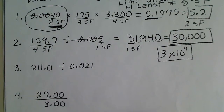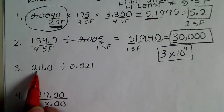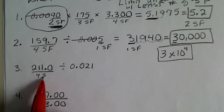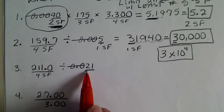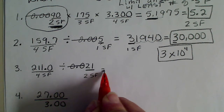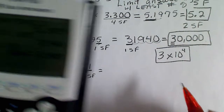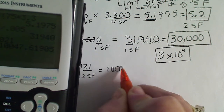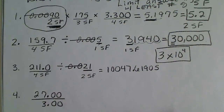In this next example, this zero is significant because of the decimal, so that value has four significant figures. Those leading zeros do not count, so this value only has two significant figures. If we do this calculation — 211 divided by 0.021 — we'll get a very long number: 10,047... and it perhaps keeps going.